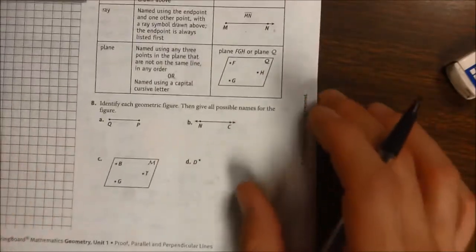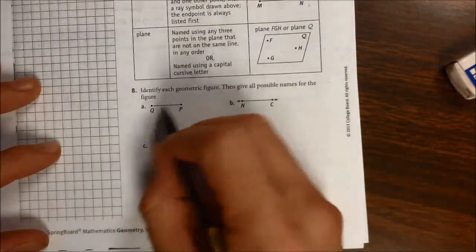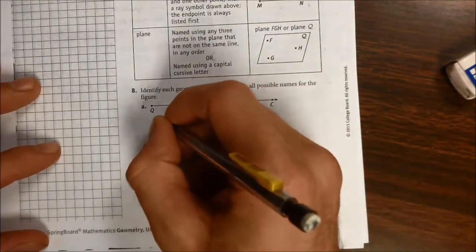So item A, we do this together in class, is identify each geometric figure. So item A, this here, this geometric figure is a line.